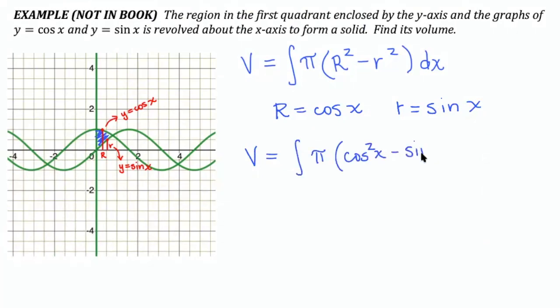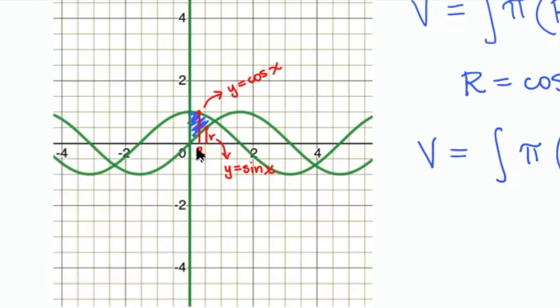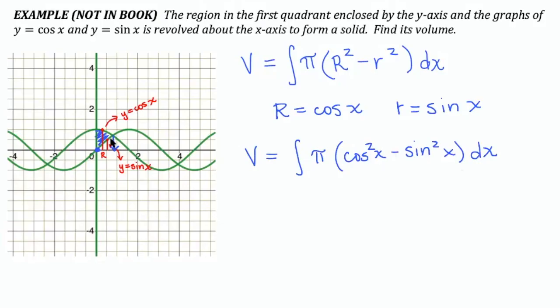Don't forget that they're squared. And what are my limits of integration? I need x values because this is a dx integral. So I'm going from the left edge of the shape, which is at 0, to this intersection point right here.